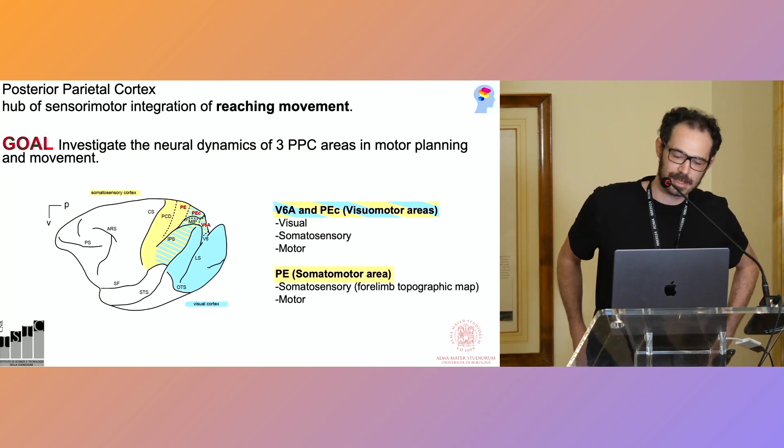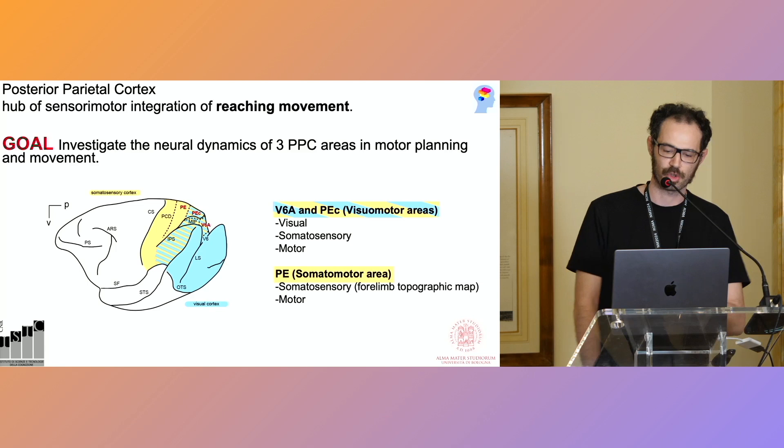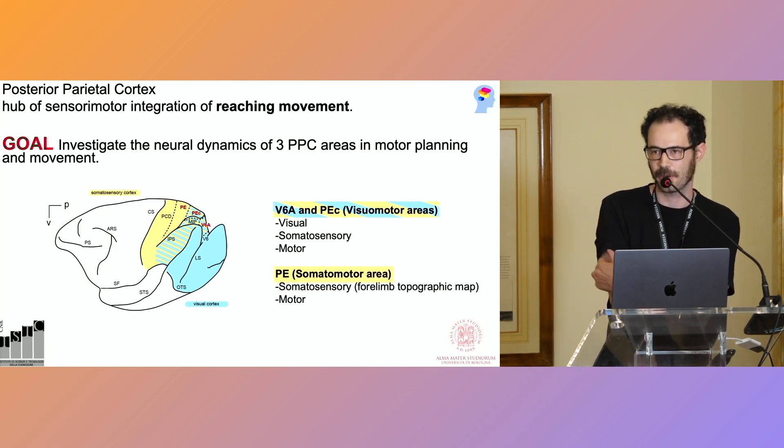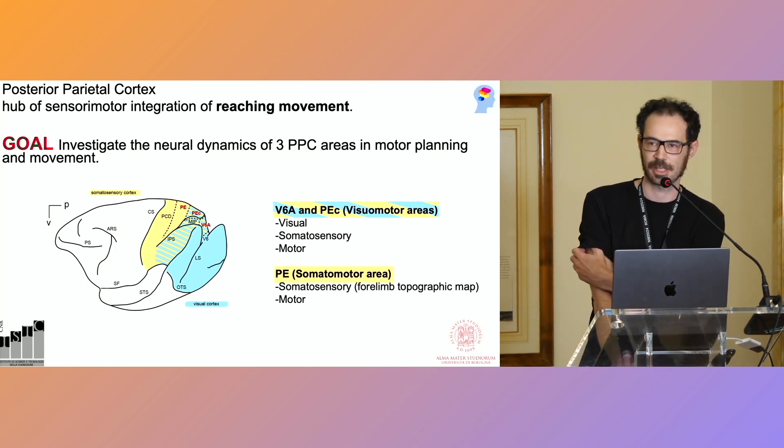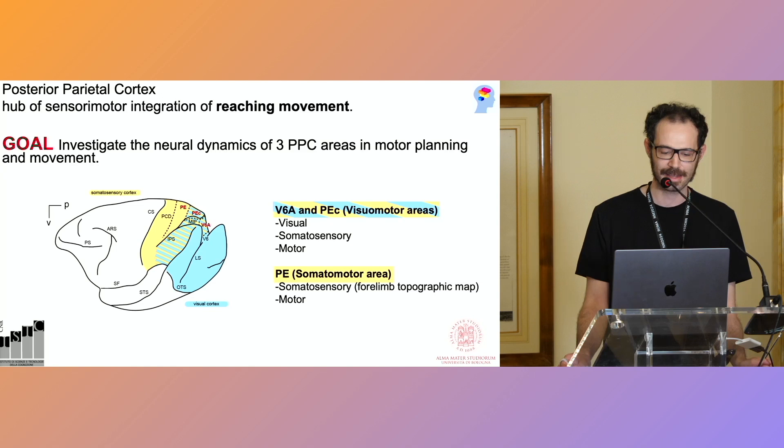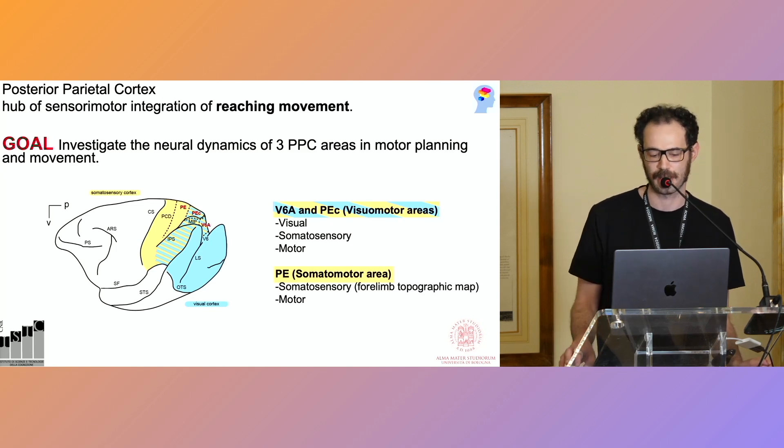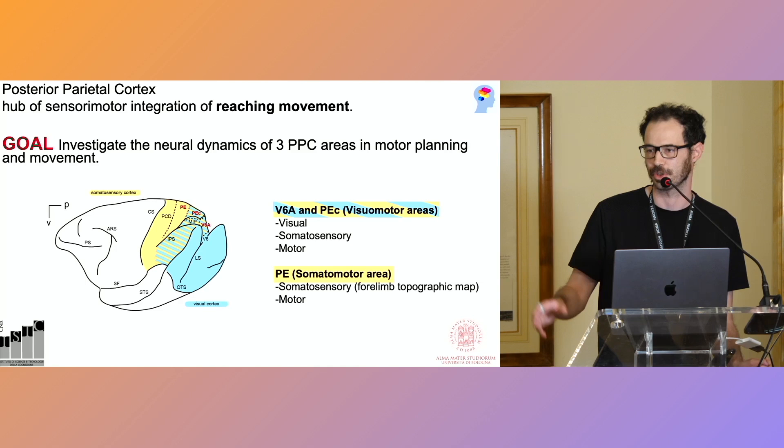V6A and PC are really similar to each other, are visual motor areas, and basically they integrate visual and somatosensory stimuli and they also have motor neurons that encode different motor parameters like the depth and the direction of arm reaching.